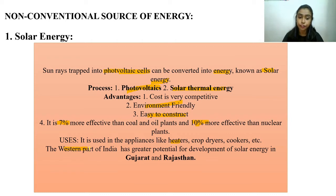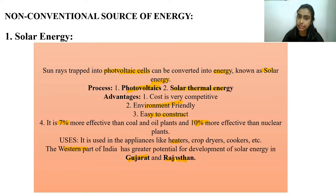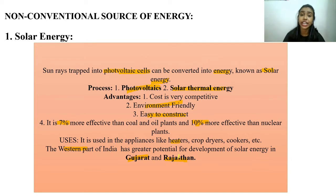Solar energy is 10% more effective than nuclear plants. It can be used in cooking appliances, especially in heaters, crop dryers, cookers, etc. In the western part of India where temperatures are higher, there is a lot of solar energy potential, especially in Gujarat and Rajasthan, where there are more sun rays and longer day duration.